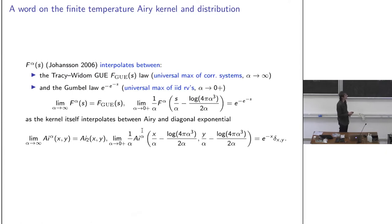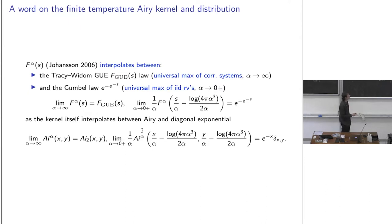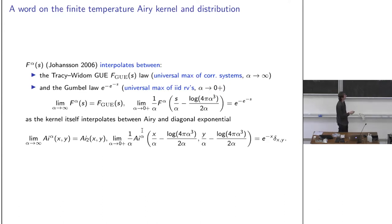These two distributions couldn't be more different. Tracy-Widom appears in correlated systems and is fairly universal in continuum models; Gumbel appears as the maximum of i.i.d. variables. The Airy kernel gives Tracy-Widom as α → ∞, and a diagonal kernel whose Fredholm determinant gives Gumbel as α → 0.